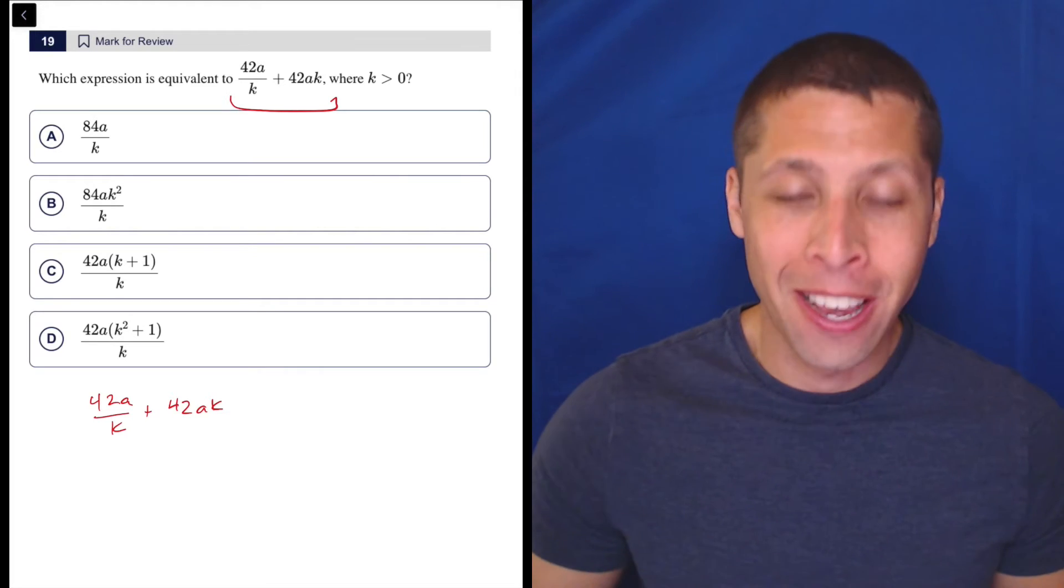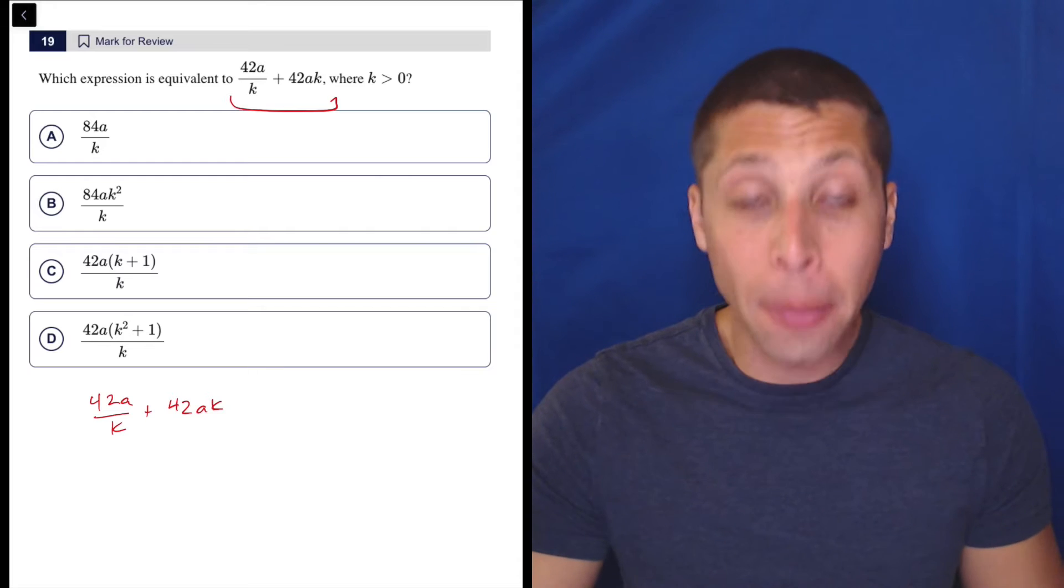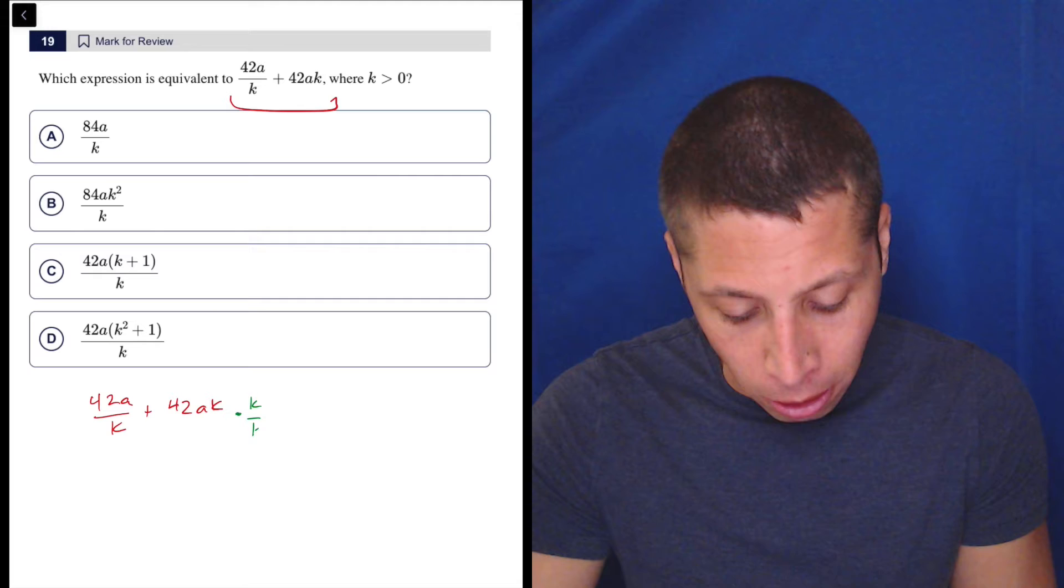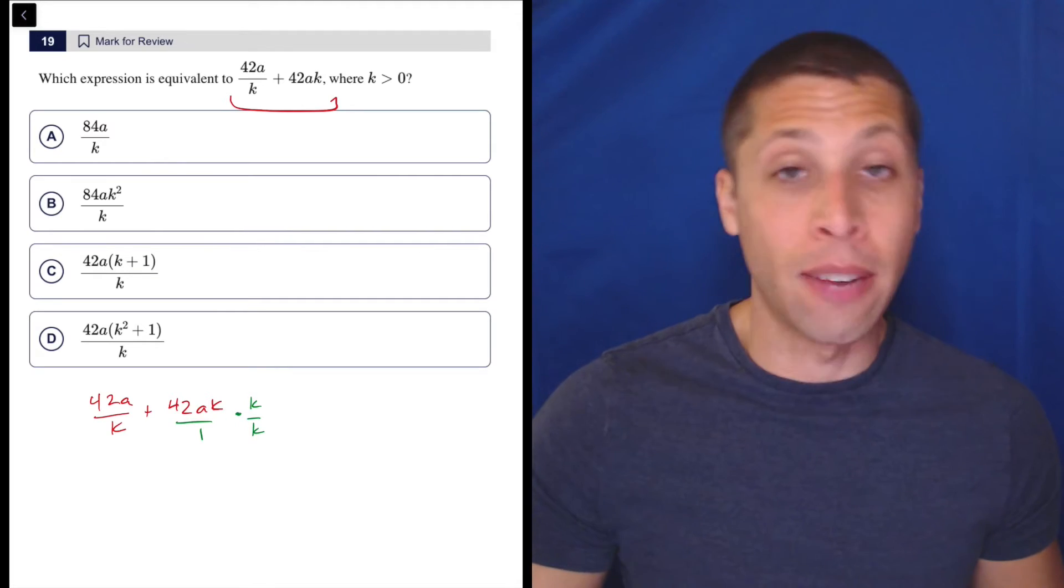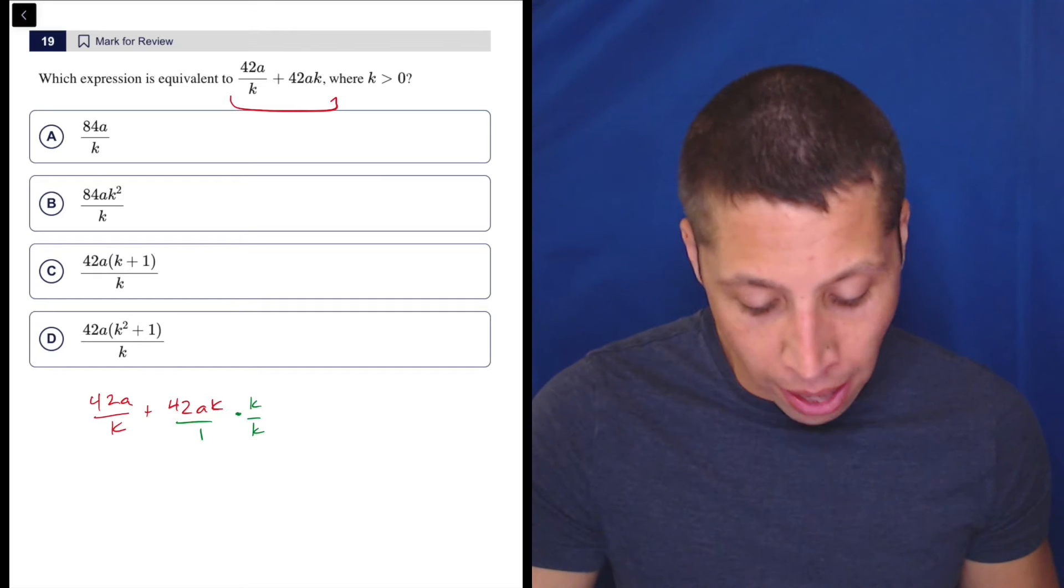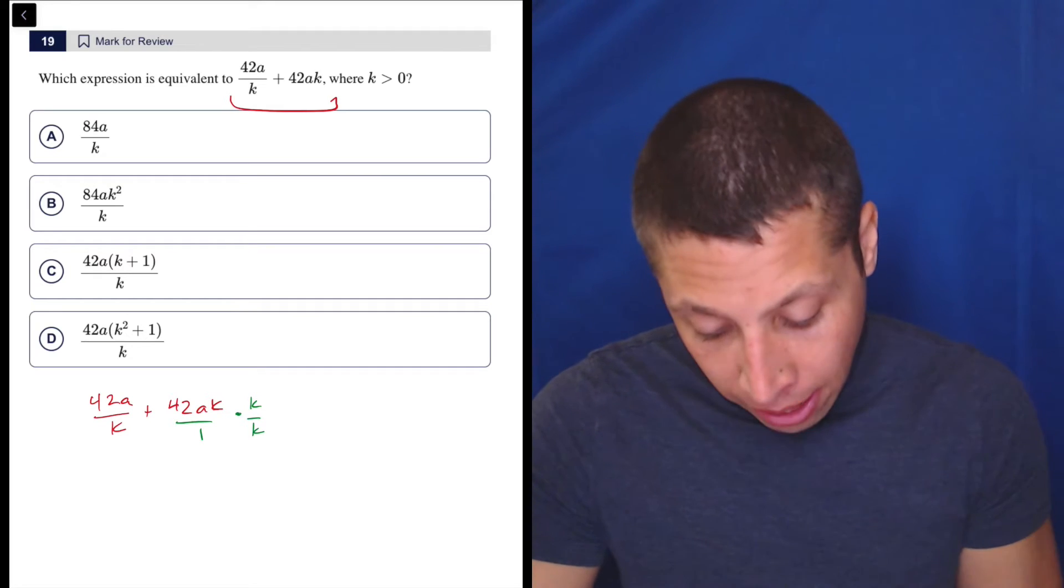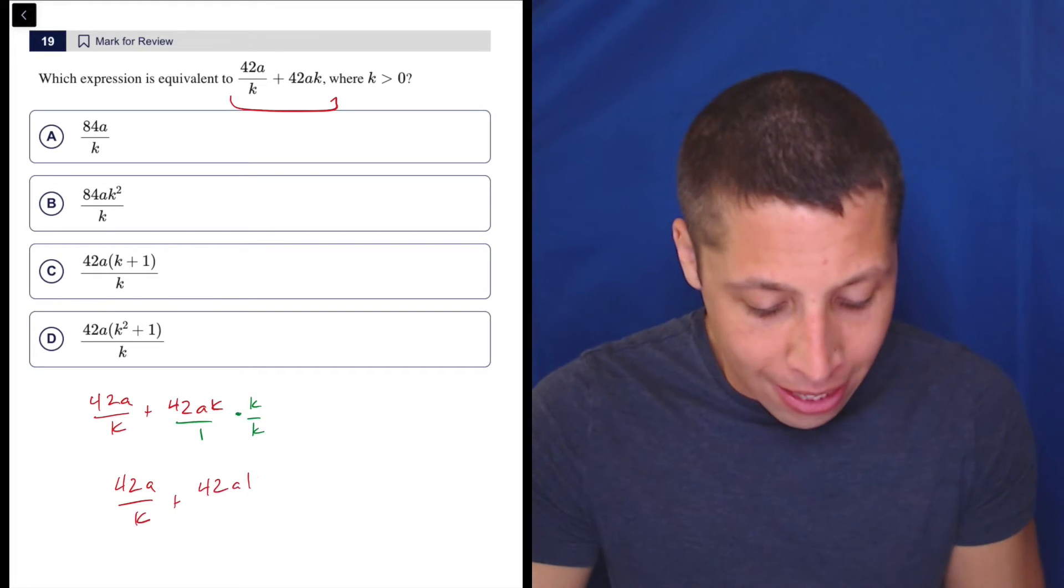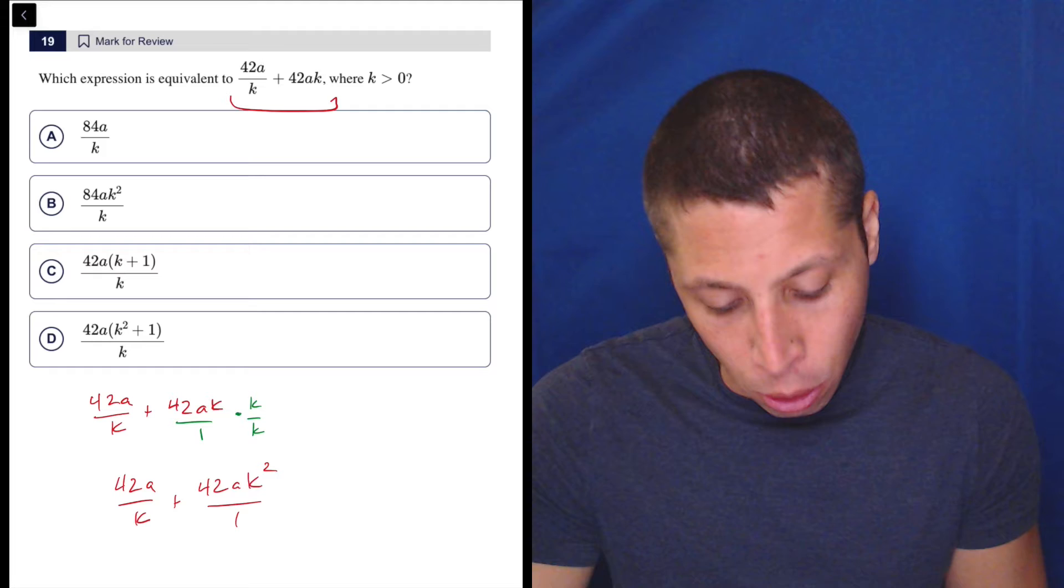In order to add fractions, you need common denominators. So in this case, the common denominator is k. So we would multiply the right term by k over k. And if it helps you to think of it as 42ak over 1, you can do that.